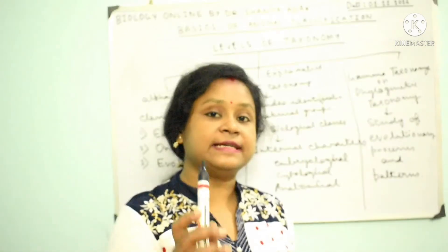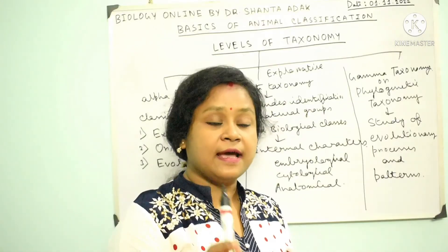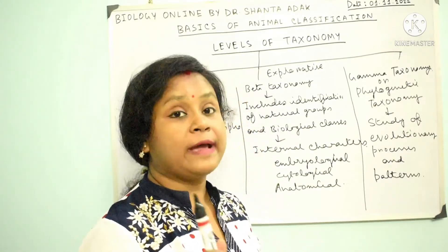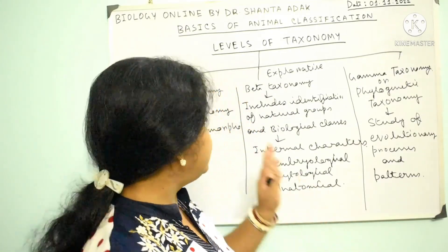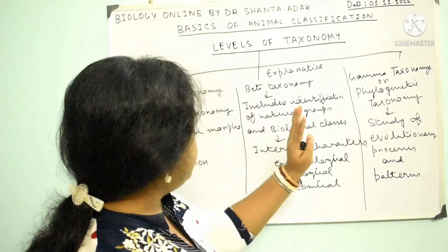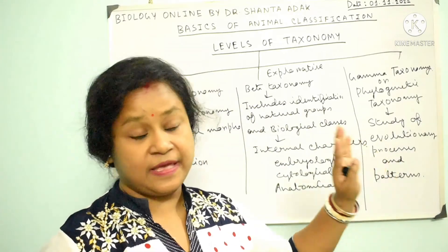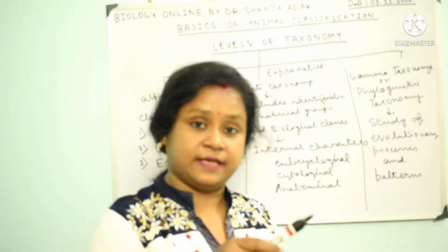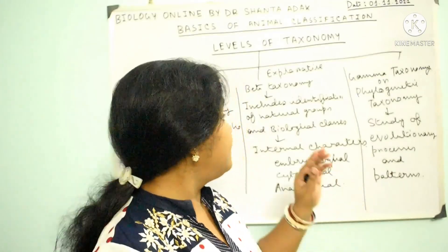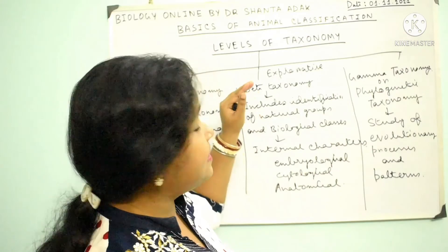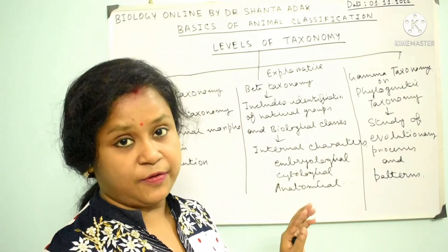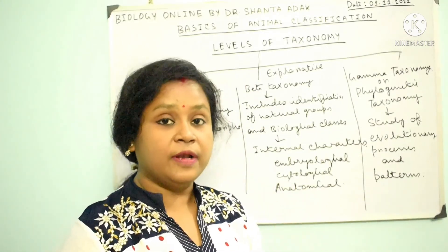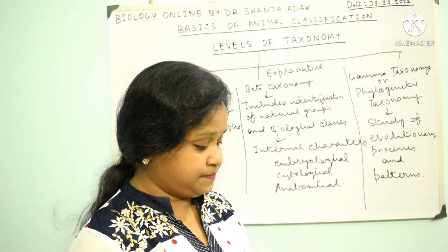In your syllabus, there is a topic on types of taxonomy. You can include these three levels of taxonomy under that. But basically these are levels of taxonomy; types of taxonomy will be discussed right now.